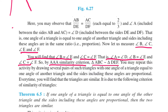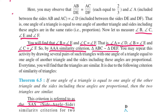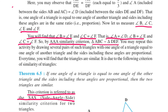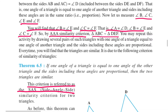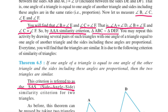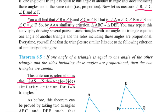Now let us measure angle B, angle C, angle E, and angle F. You will find that angle B and angle E are equal, angle C and angle F are equal — that is, angle A equals angle D, angle B equals angle E, and angle C equals angle F. So, by AAA similarity criteria, triangle ABC and triangle DEF are similar. We may repeat this activity for several such pairs of triangles. Every time you will find that the triangles are similar.